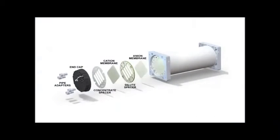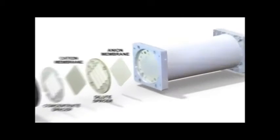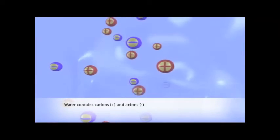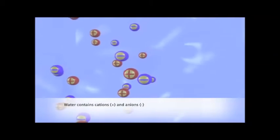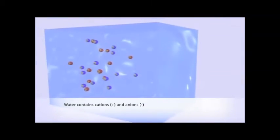To understand how the patented IonPure CEDI technology actually works, let's go down to the molecular level and take a look at some water containing ions. Water contains positively charged cations, represented by plus signs, and negatively charged anions, represented by minus signs.